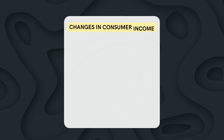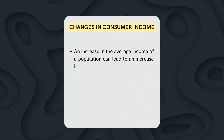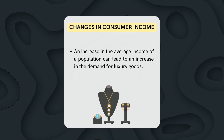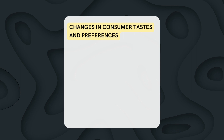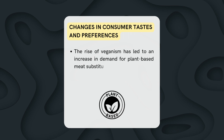Here are some real-life examples of how each of these factors can shift the demand curve. Changes in consumer income: an increase in the average income of a population can lead to an increase in the demand for luxury goods. Changes in consumer tastes and preferences: the rise of veganism has led to an increase in demand for plant-based meat substitutes.